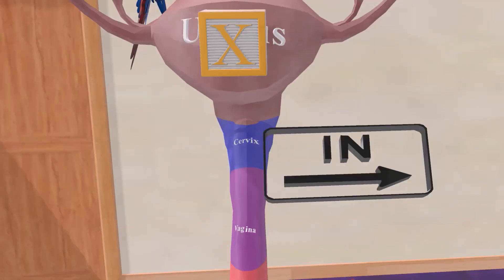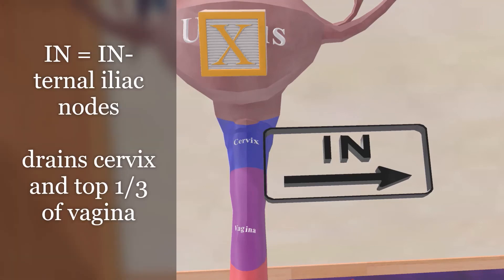Then we come to the cervix, and out of the cervix there's this IN sign — telling us where to get in. This IN sign is also covering the top third of the vagina, as the cervix and the top third of the vagina are drained by the internal iliac nodes. Now here there's a lot of overlap — in some books you might see obturator nodes — but we've spoken about the primary drainage, which is the internal iliac lymph nodes.